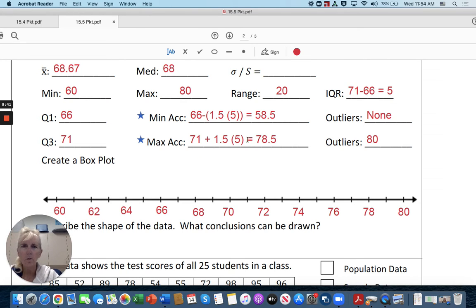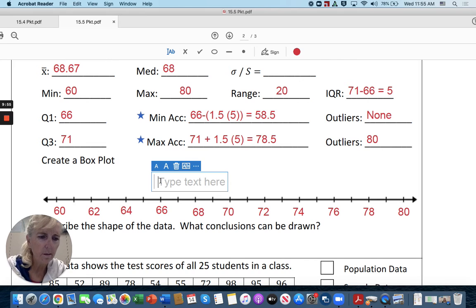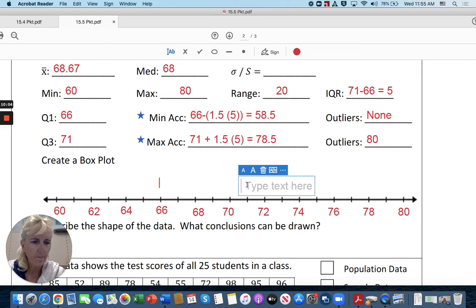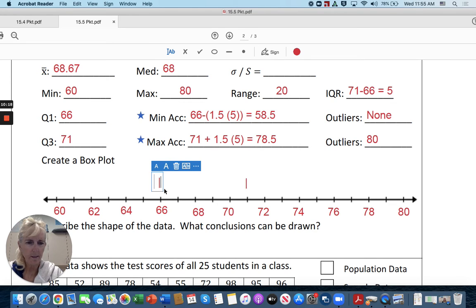Okay, so yeah I don't know that I'm gonna be able to let's try this okay so the front of the box is going to be quartile 1 at 66 and quartile 3 is at 71.